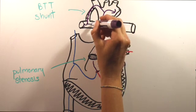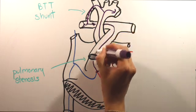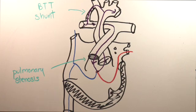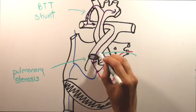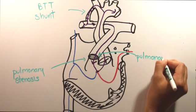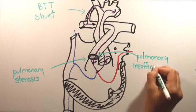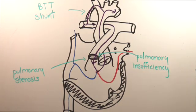A circular shunt occurs when there is significant pulmonary insufficiency or regurgitation. Even if the valve is stenotic, if the valve doesn't close well, blood in the main pulmonary artery can backflow from the PAs into the right ventricle. So in this situation, the blue and the red blood mix in the heart,